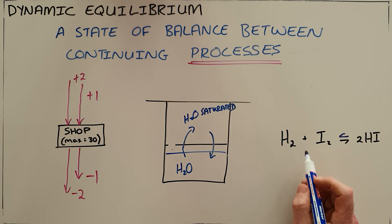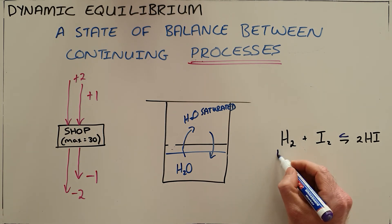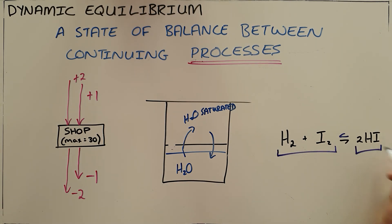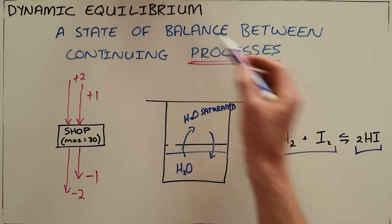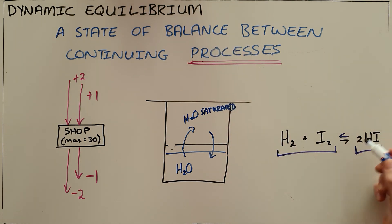Once again, we form an equilibrium where the concentrations of both sides remain constant. It is that state of balance, although there is constant change between reactants and products. These are all examples of dynamic equilibrium systems.